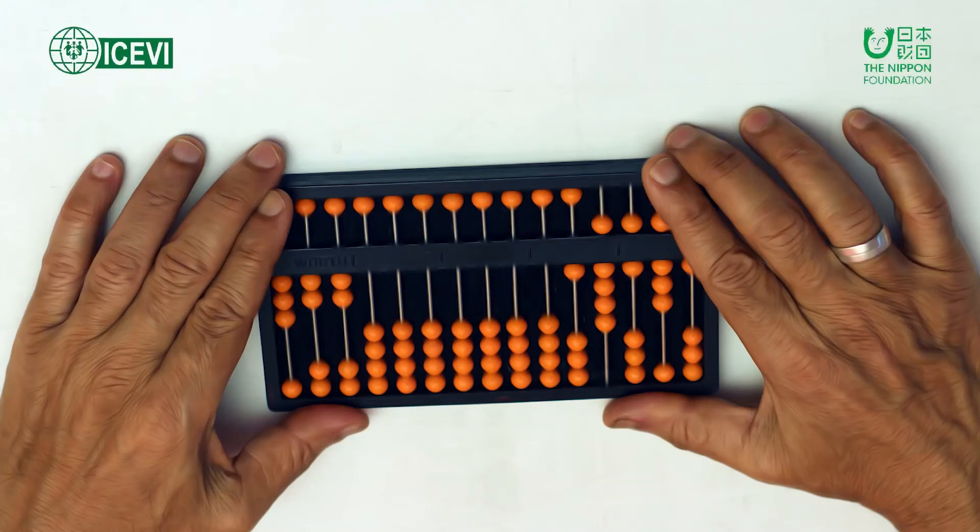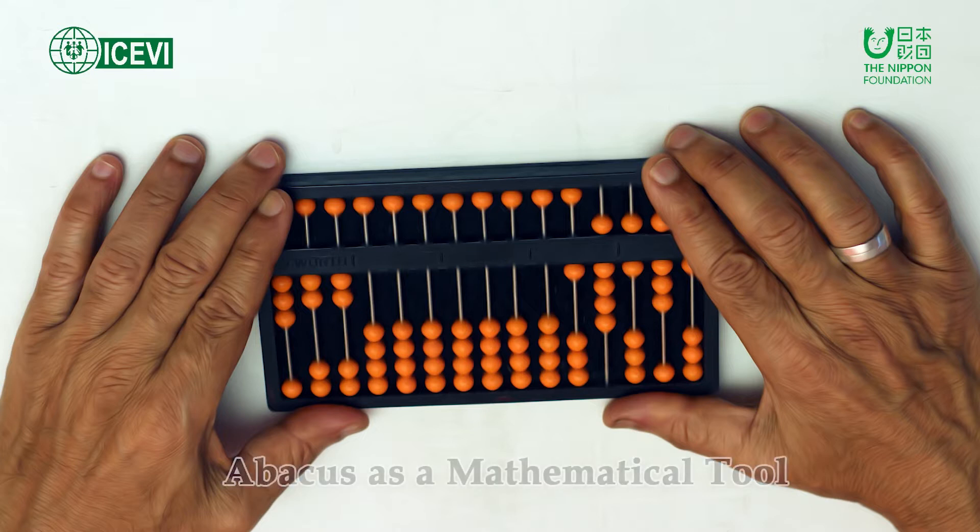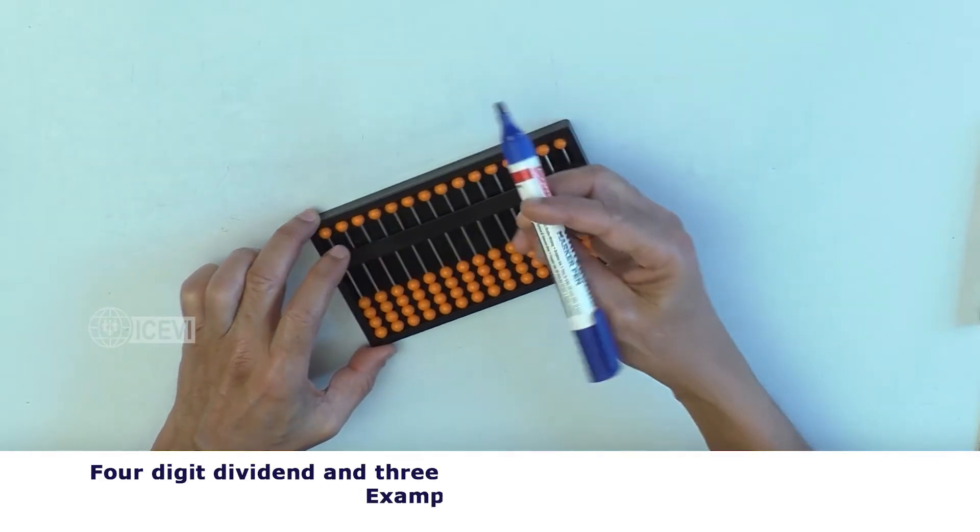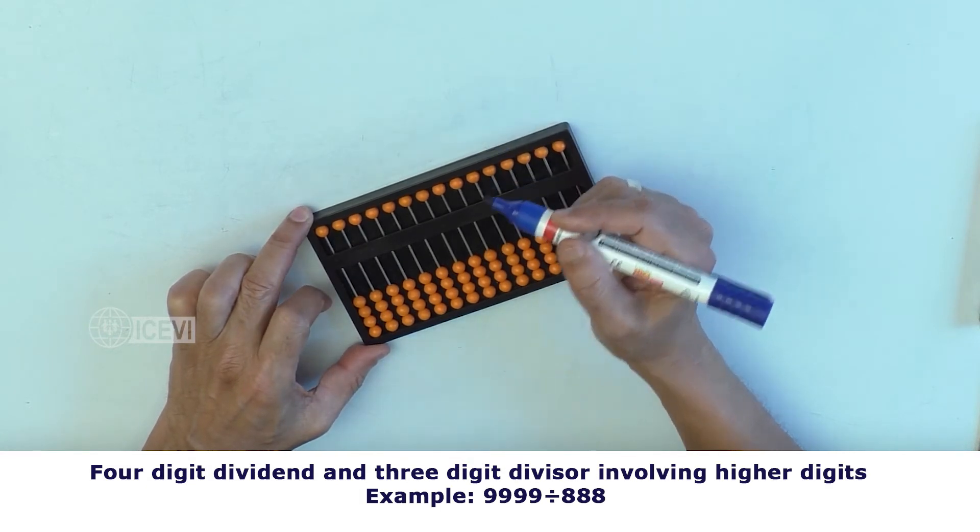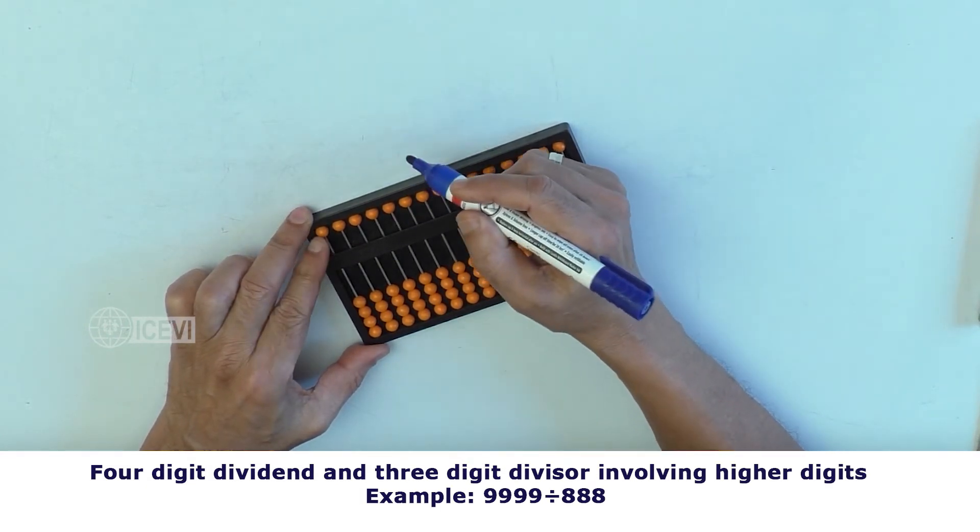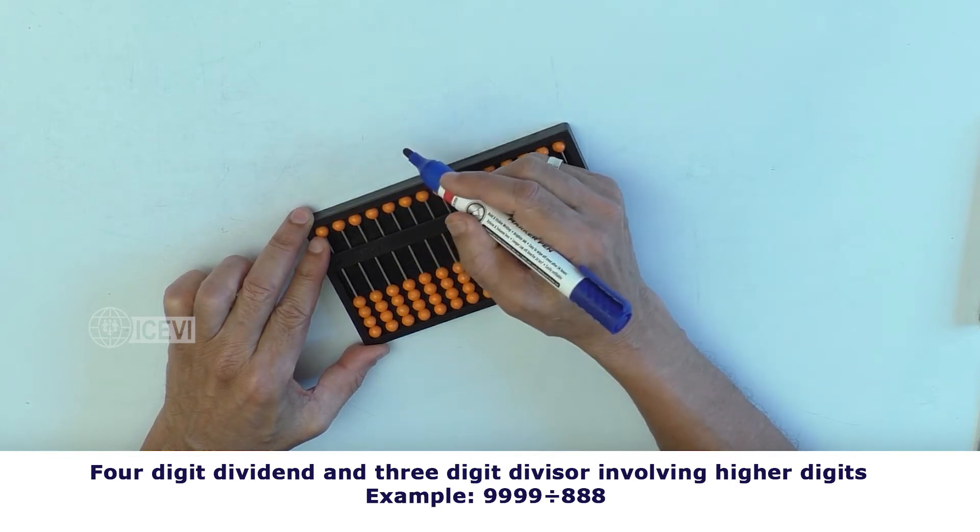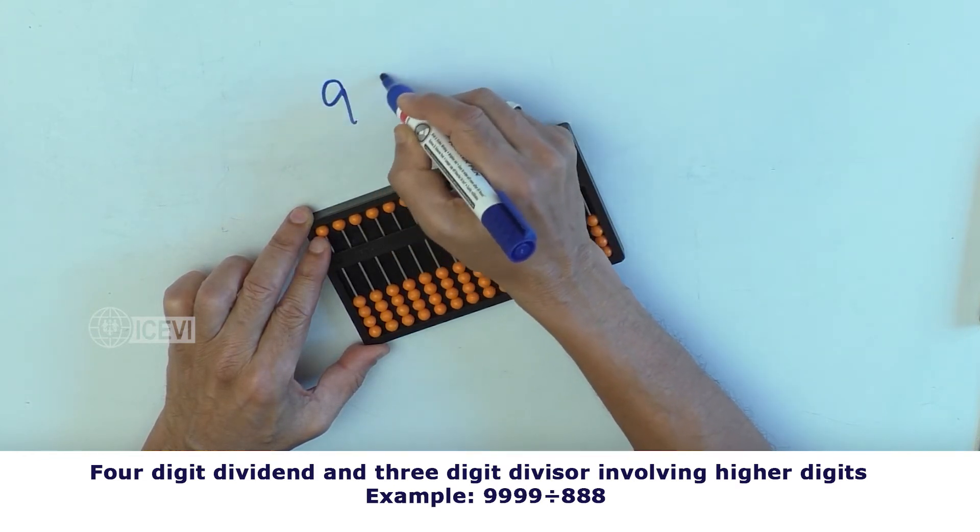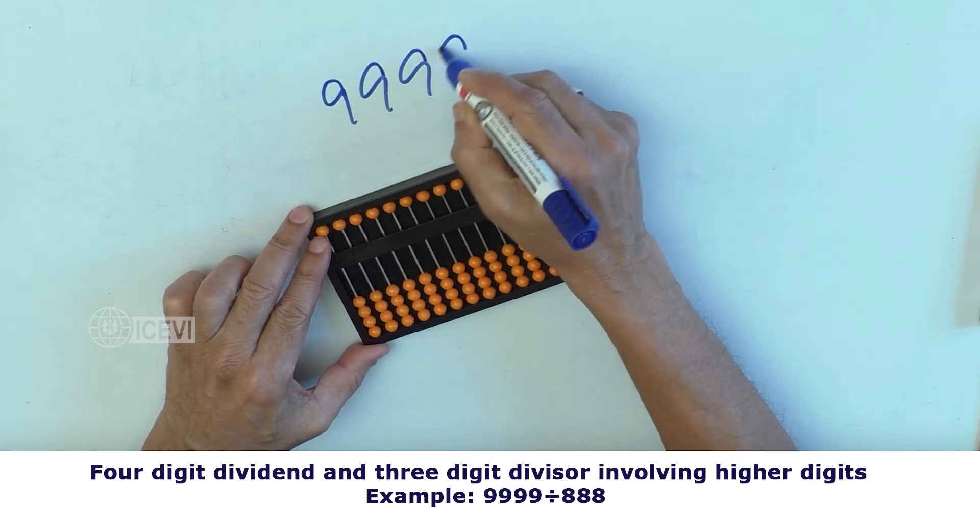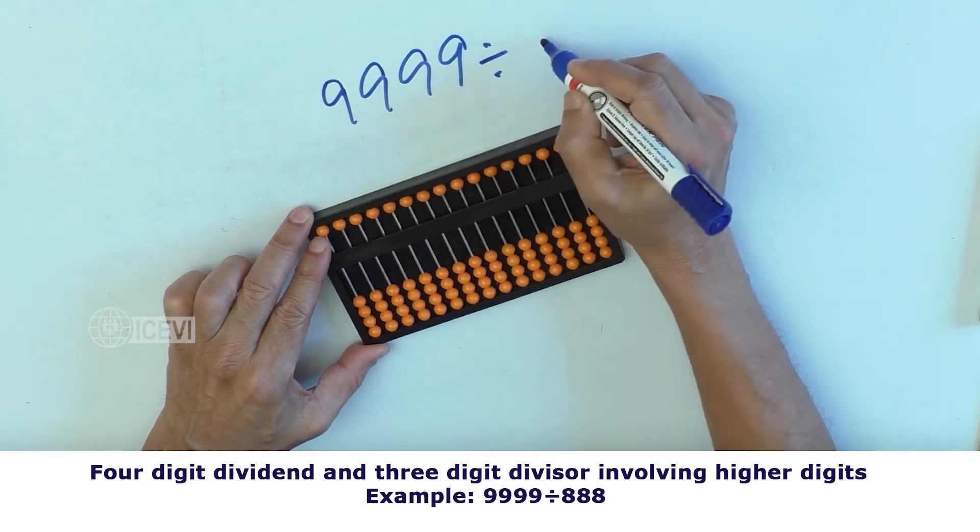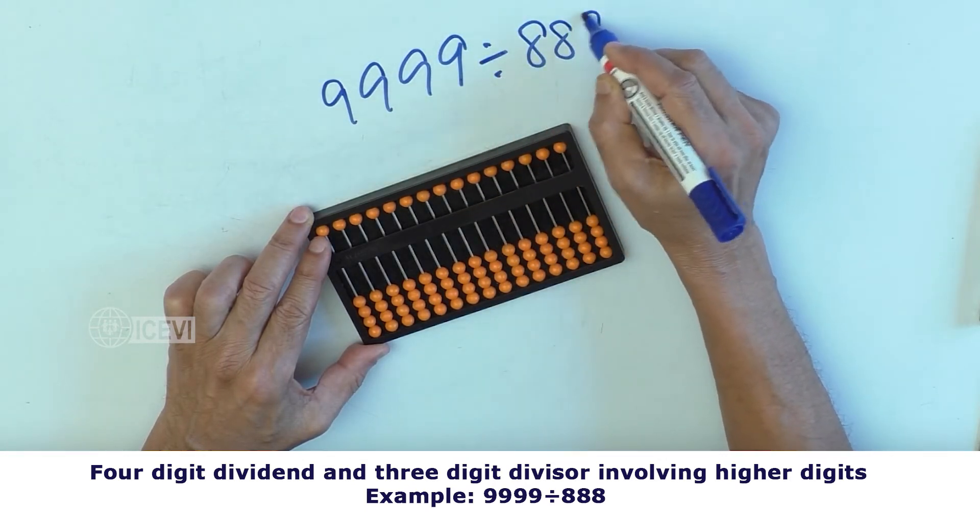The ICEVI Nippon Foundation Mathematics Package for Teachers Video Series: Abacus as a Mathematical Tool. Title of the video: 4-Digit Dividend and 3-Digit Divisor Involving Higher Digits. Example: 9999 divided by 888.